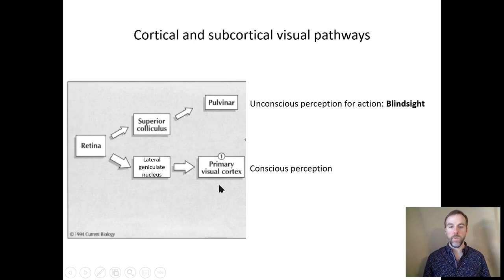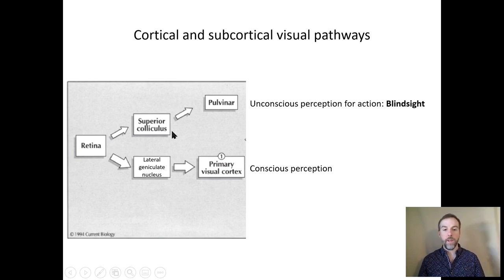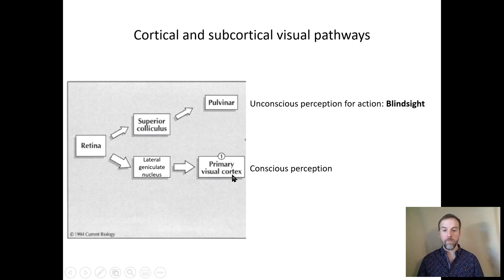Here's just another representation, a more schematic one, of our cortical pathway and our subcortical pathway. Both of these pathways continue on. We're going to see that information goes from the pulvinar to the cortex, and from the primary visual cortex it goes to many different areas within the cortex.